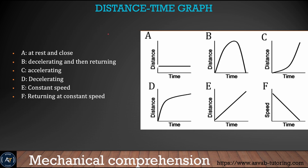In this figure we'll learn the distance-time graph. There are a few graphs here — make sure that you remember those graphs because those are questions you might see in the actual test. Graph A shows an object at rest, so the distance will always be the same. Figure B is decelerating and then returning. Figure C is accelerating. D is decelerating. Figure E is constant speed, and figure F is returning at constant speed.